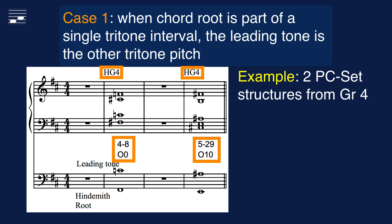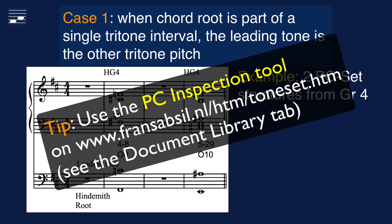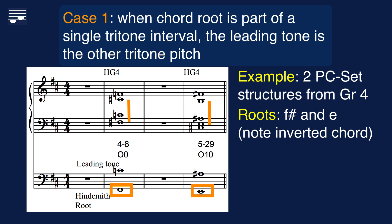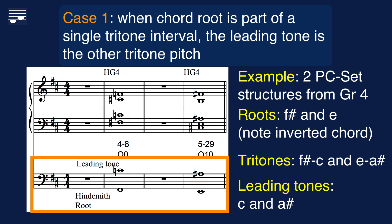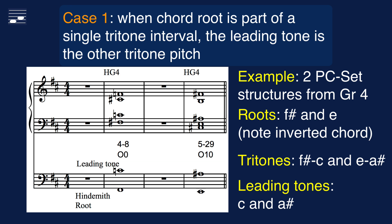In the example we see two sets from group 4, with the set label and the transposed or inverted prime form shown below the staff. Use the PC Set GUI tool on my website for easy inspection of these forms. From the perfect 5th intervals marked in the score we look for the lowest to find the roots F sharp and E respectively. Both roots are also part of a tritone and therefore C and A sharp are the leading tones. I show both the Hindemith chord root and leading tone on a separate lower staff, which will help in designing and evaluating Schillinger diatonic symmetric progressions with PC sets.